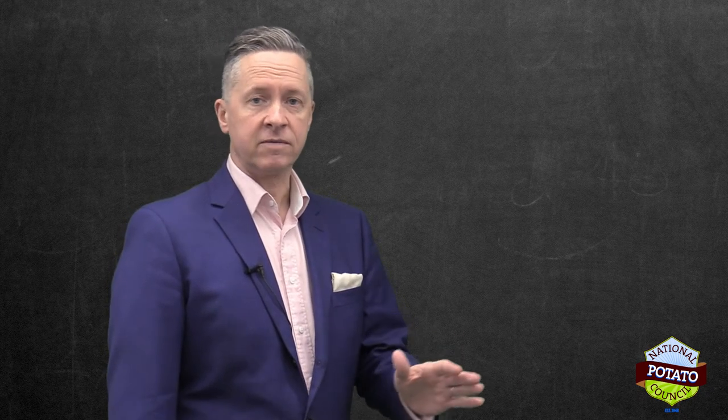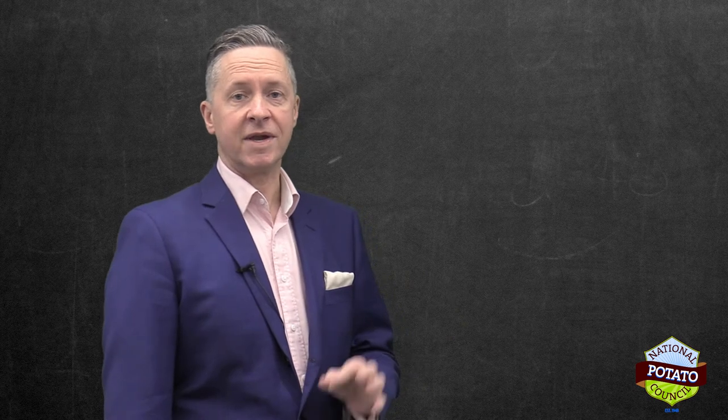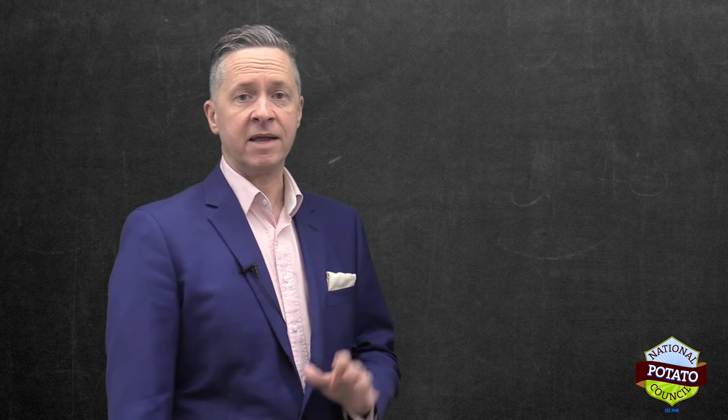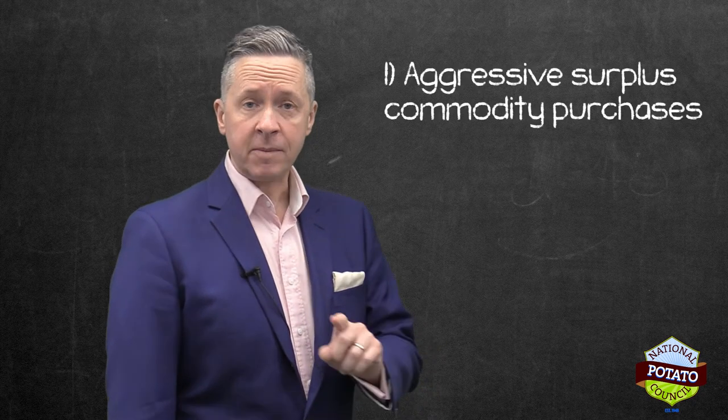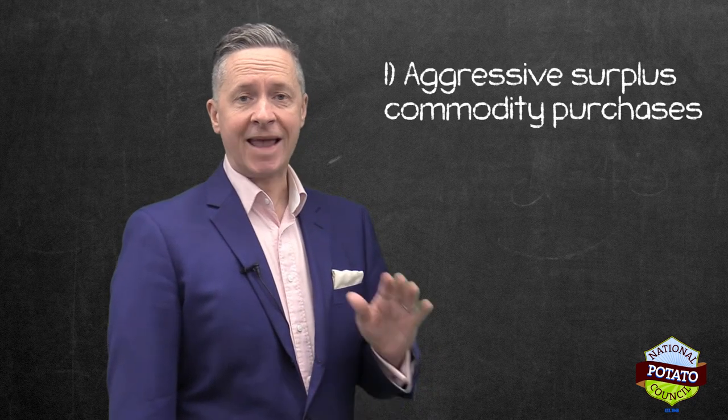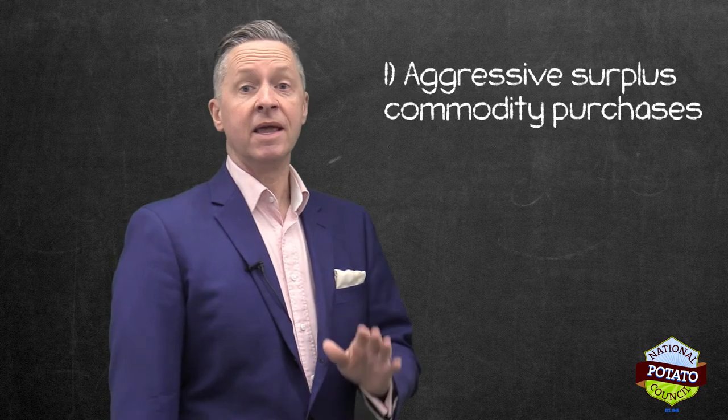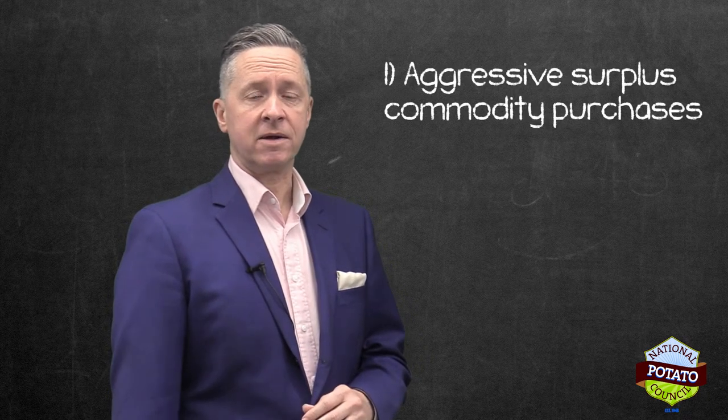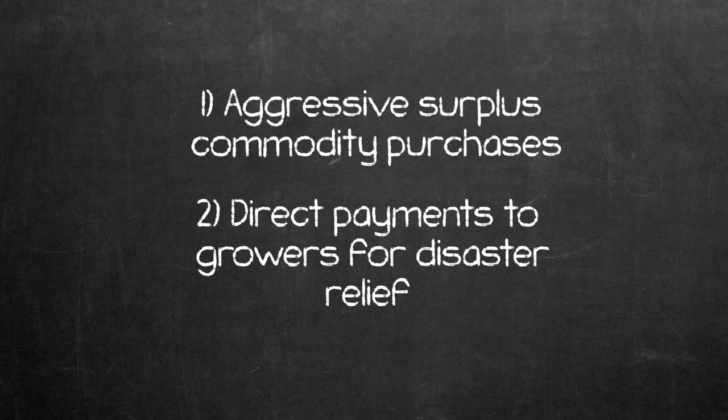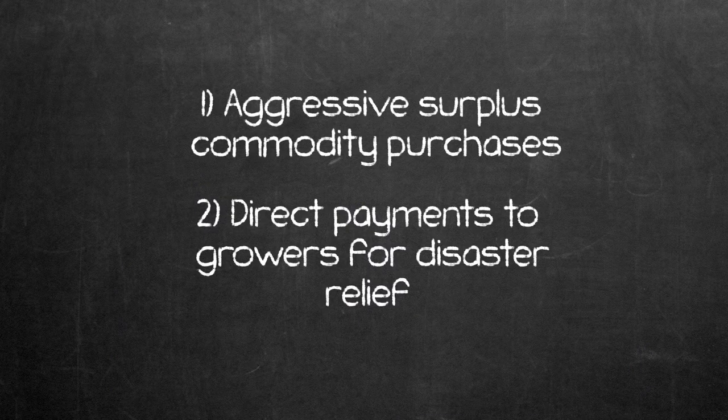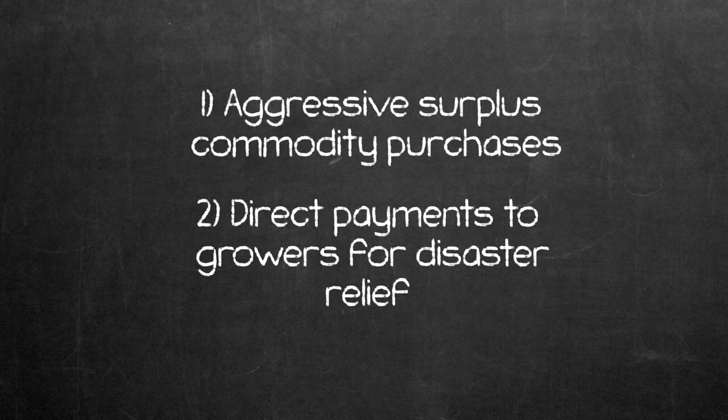NPC, Donovan and the other state organizations created a simple but effective plan to immediately provide relief. First, we had to push USDA to temporarily become our customer in the absence of the food service industry in order to clear out the growing backlog. Second, USDA needed to provide meaningful disaster relief to growers who were impacted in order to stabilize these family farms until the marketplace strengthened.